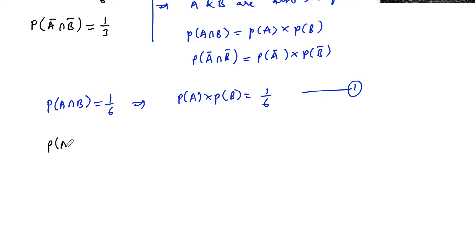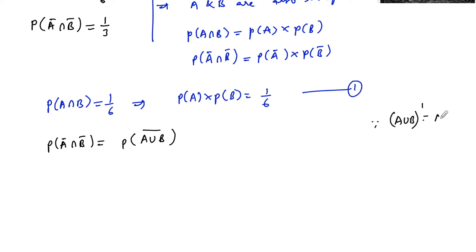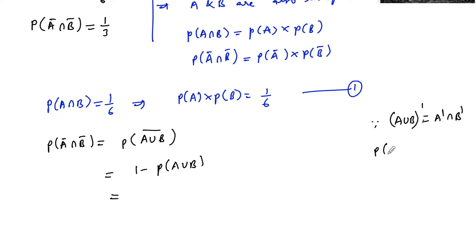P(Ā∩B̄) can also be written as P(A∪B) complement, since we know that (A∪B) complement equals A complement intersection B complement by De Morgan's law. So P(Ā∩B̄) = P((A∪B)̄) = 1 − P(A∪B).